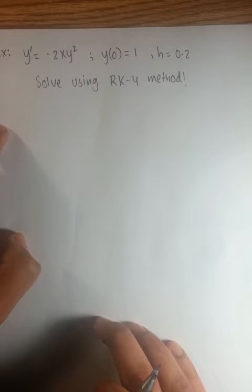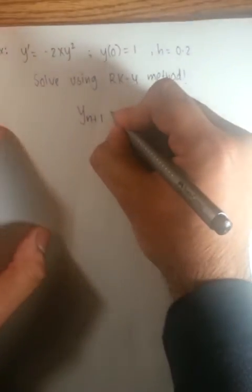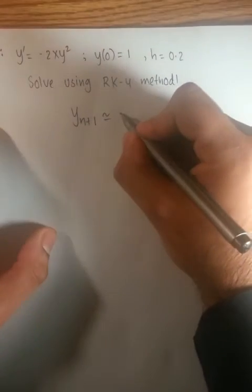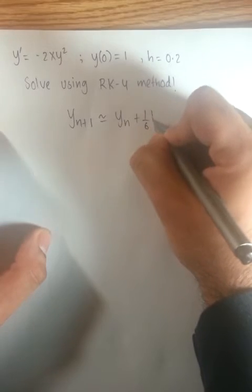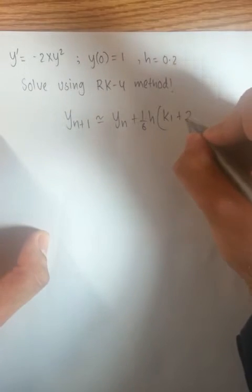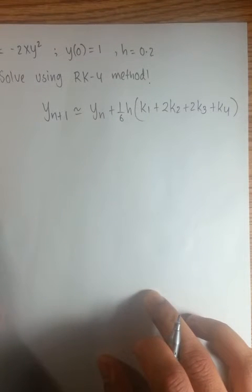What we are trying to find here is yn plus 1 value. And from the previous video, you must have noted down that yn plus 1 is equal to yn plus 1 sixth h times k1 plus 2 times k2 plus 2 times k3 plus k4. That's the formula to calculate yn plus 1 value.